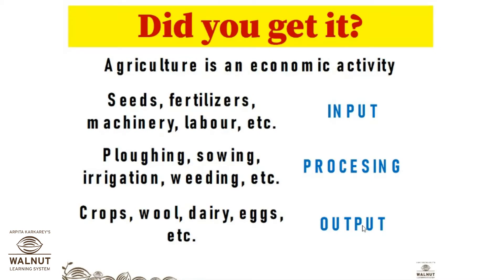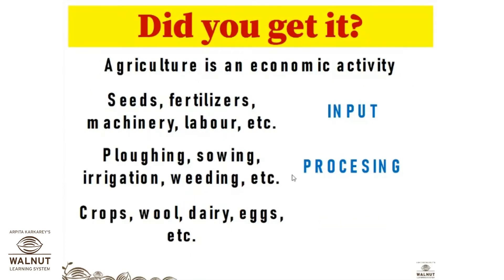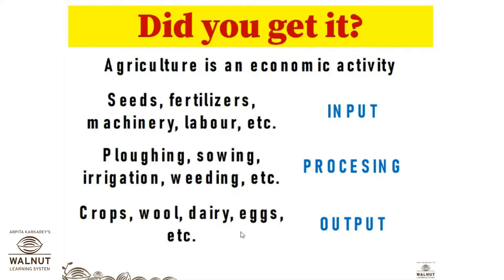Now explain farming as an economic activity by dividing the process of farming into input, processing, and output. Agriculture is a primary activity. Inputs are seeds, fertilizers, machinery, and labor. Then we carry out processes like plowing, sowing, irrigation, and weeding. Whatever production we get is considered as output — crops, wool, dairy, eggs, etc. This is how you write the answer for this question.